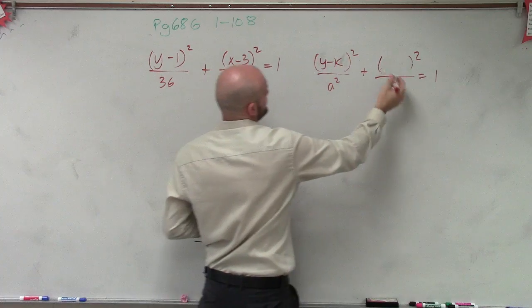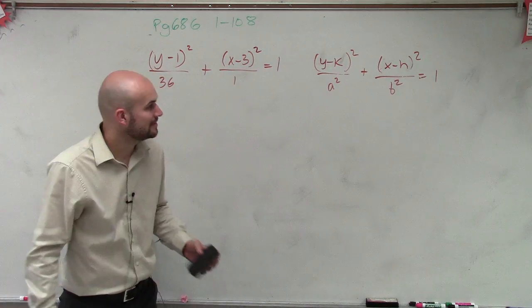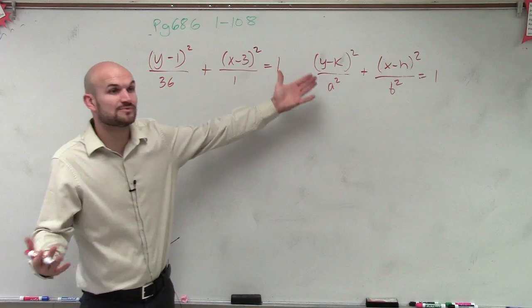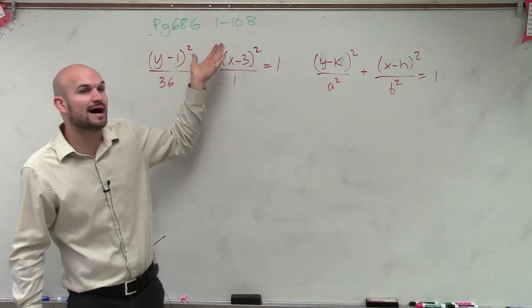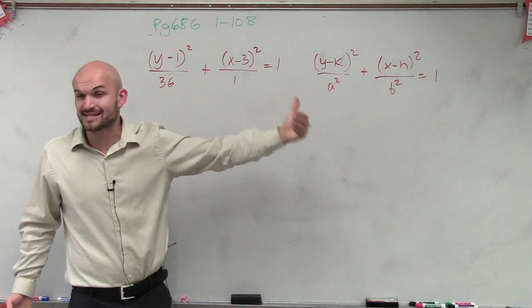Y minus K, X minus H. Alright, so that's the form we're using because now we know that since my A is under my Y, we're dealing with a vertical and they're asking us to graph it.